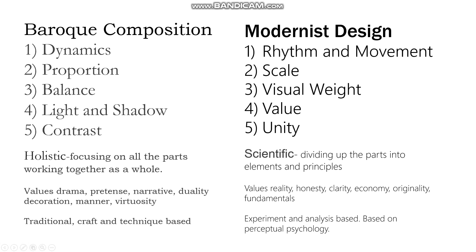The biggest difference is the overall way they thought about the endeavor of composition or design. In the modernist period it was viewed as a scientific, experimental endeavor — about dividing things up, breaking things down to their smallest parts. Whereas in the Baroque, it was much more thought of as part of a craft, part of a tradition, where it was about doing all the things together.